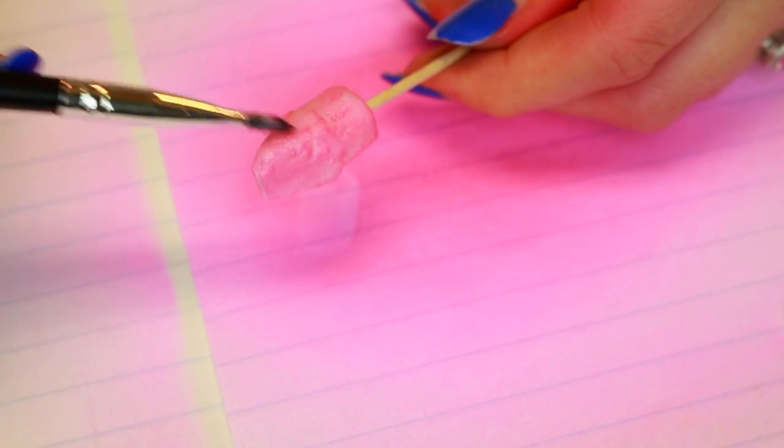Then I sprayed the pencil cap eraser with pink food coloring and I applied a little icing to this just to give it a more opaque look.